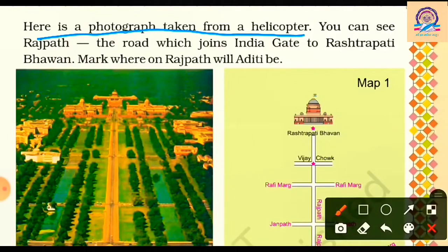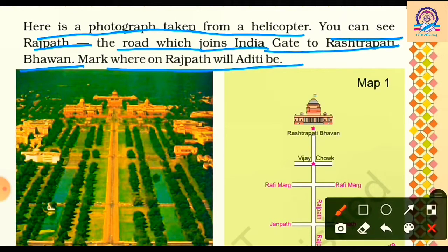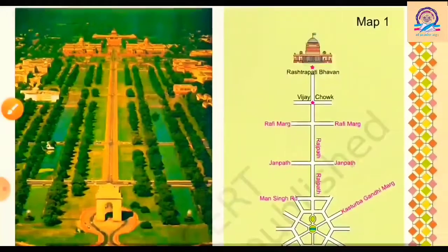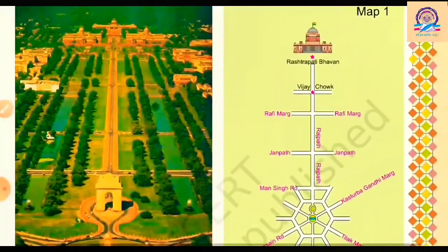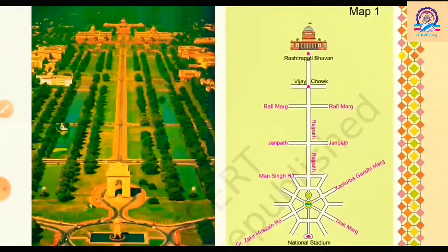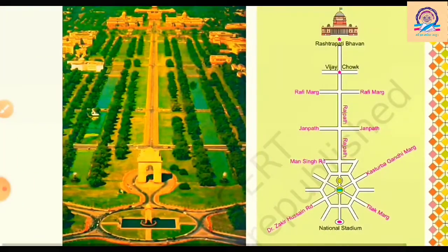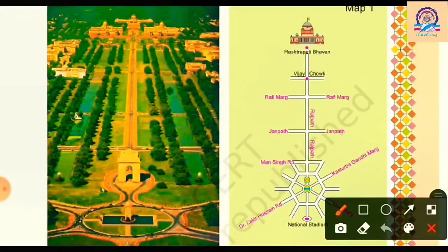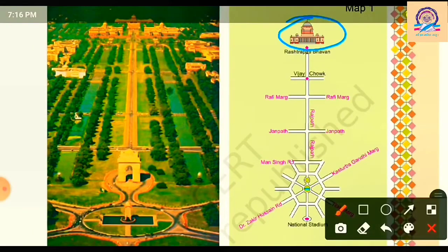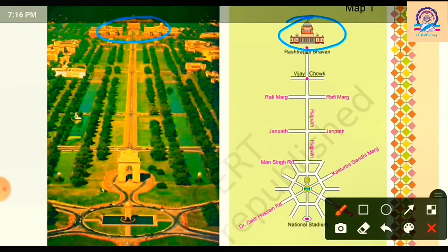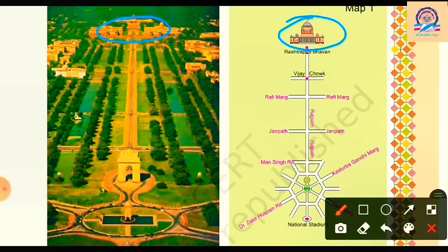There is a photograph taken from a helicopter. You can see Rajpath, which is the road that joins India Gate to Rashtrapati Bhavan. We need to mark where on Rajpath Aditi will be. On the left they have given the helicopter photograph and on the right the map of that exact area. We have to find the position of Aditi on Rajpath. On the top of the map as well as the photograph you can see Rashtrapati Bhavan.